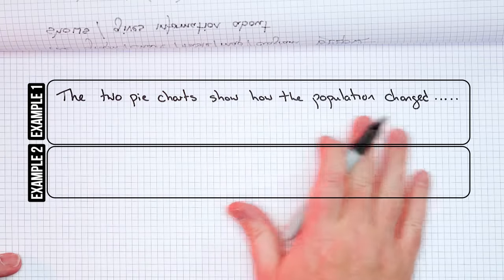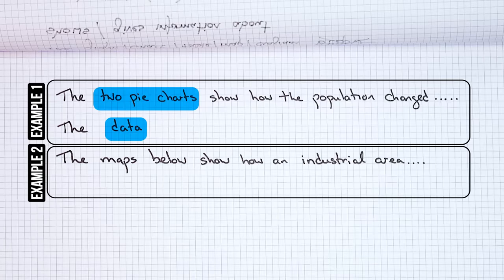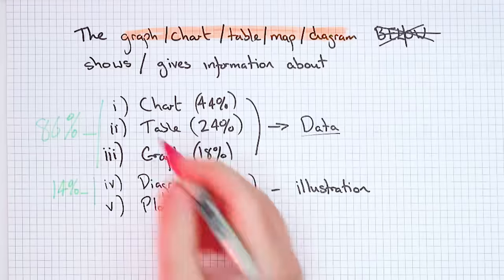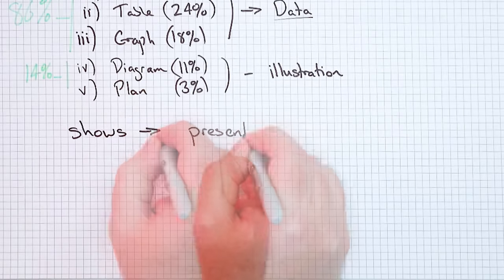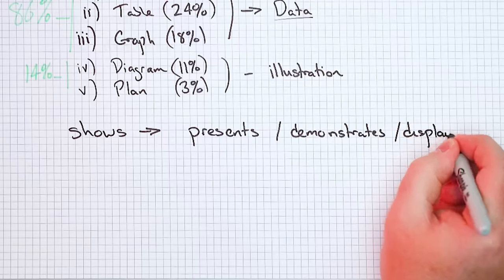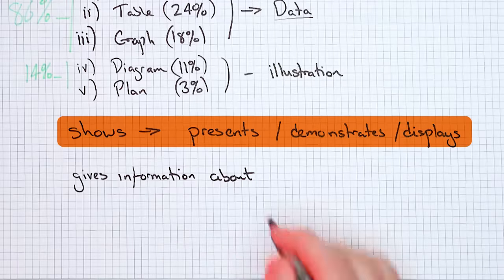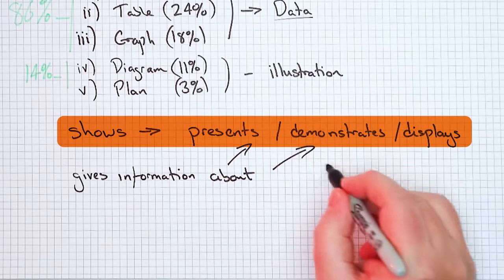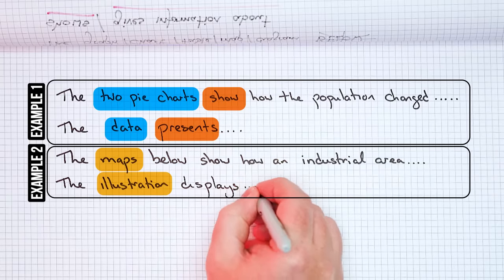That leaves us with 'shows' and 'gives information about.' For 'shows,' you could put 'presents,' 'demonstrates,' or 'displays.' Any of these words are appropriate and accurate. What I would recommend is just learn one or two and then move on. For 'gives information about,' you can use the exact same words — keep it simple. So we could put 'presents' here, and we could put 'displays' here.